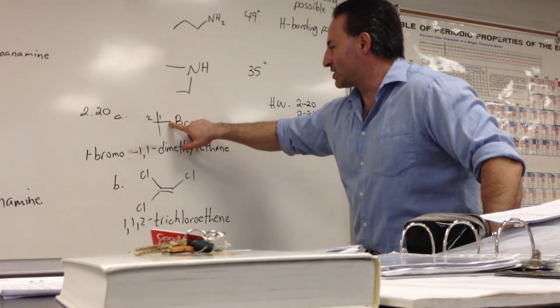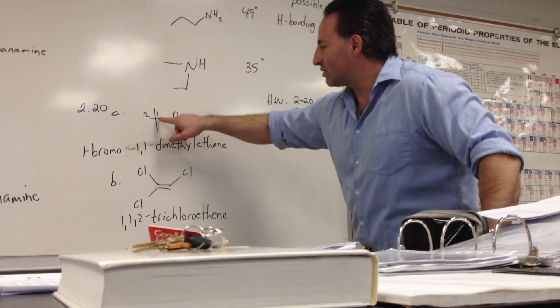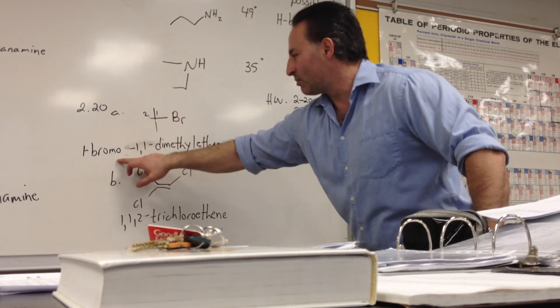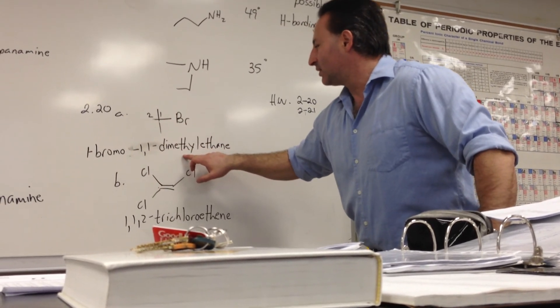So here we have an ethyl chain, one, two carbon atoms. Remember, this is not a carbon atom here. And two methyl groups attached to that. So we'd say 1-bromo-1,1-dimethyl ethane.